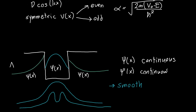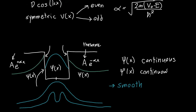I'll make another claim: since the system is symmetric, the coefficient a on the left (a·e^(+αx)) and the coefficient e on the right (e·e^(−αx)) must be the same — we can just call both of them a. You could rigorously prove this by applying boundary conditions at both interfaces. This allows us to apply boundary conditions at only one interface. If x equals zero is the center, we can apply boundary conditions at x = −L/2, where L is the length of the quantum well.